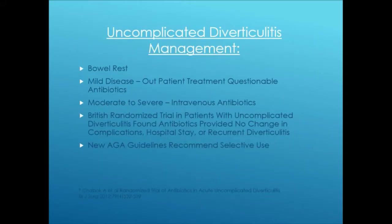A CT showing uncomplicated diverticulitis of the sigmoid colon with fat stranding and bowel wall thickening but no abscess represents mild disease. Uncomplicated diverticulitis is treated with bowel rest. Studies now question the need for antibiotics in very mild disease — a British randomized trial found antibiotics provided no change in complications, hospital stay, or recurrence. The AGA guidelines suggest selective antibiotic use, though practically most clinicians still treat mild diverticulitis with antibiotics.